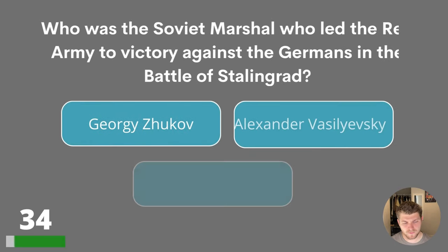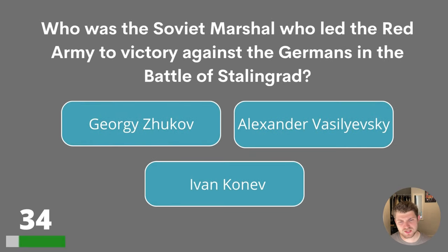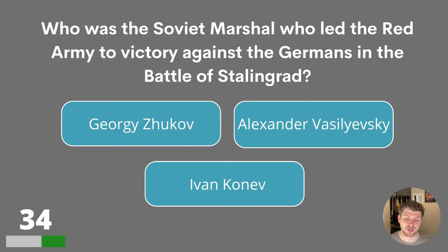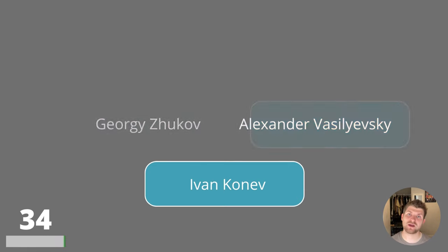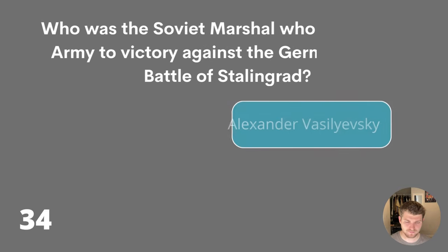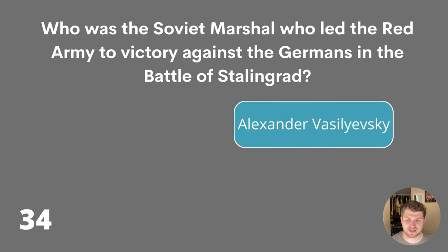Question thirty-four. Who was the Soviet Marshal who led the Red Army to victory against the Germans in the Battle of Stalingrad? Georgy Zhukov, Alexander Vasilevsky or Ivan Konev? The answer is Alexander Vasilevsky.